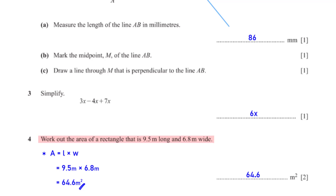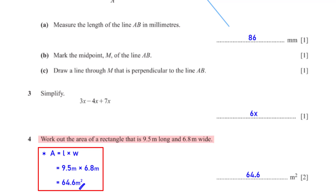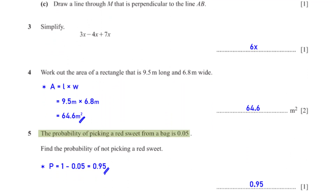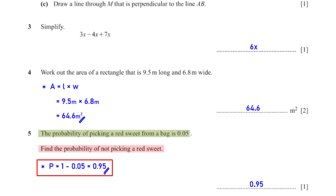Work out the area of a rectangle that is 9.5 meters long and 6.8 meters wide. Here is the formula for the area of a rectangle. The length L is 9.5 meters and the width W is 6.8 meters, giving us 64.6 meters squared. The probability of picking a red sweet from a bag is 0.05. The sum of the probabilities of picking and not picking a red sweet must add up to 1, so we subtract 0.05 from 1, which gives us 0.95.